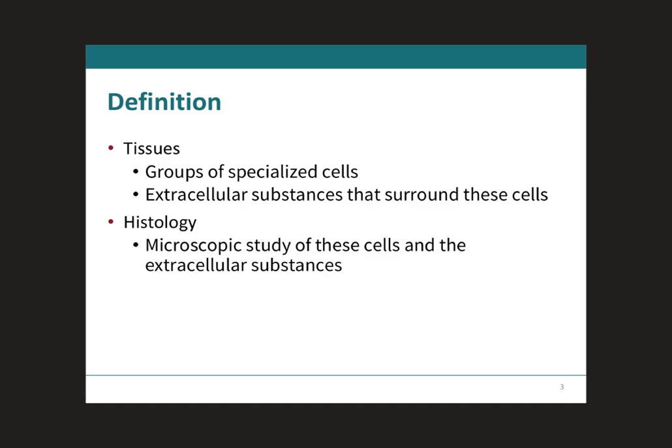The definition of tissues will be when you have specialized cells that are coming together to form structure, and this structure is the tissue. The cells need an environment to be able to grow and perform its functions, and this environment is called the extracellular, or outside of the cell, environment, which will surround these specialized cells.